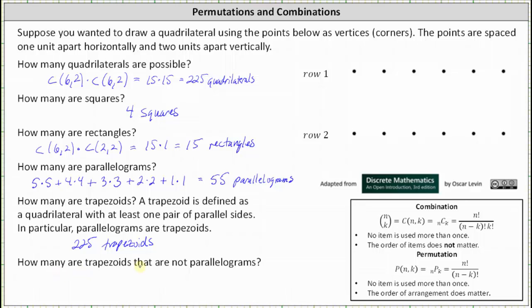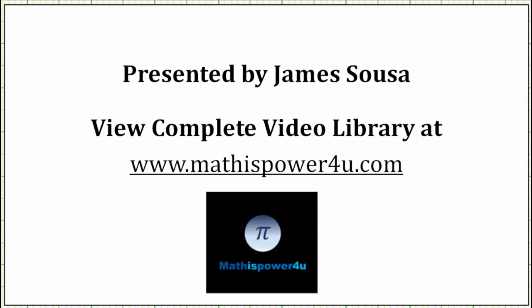The last question is how many are trapezoids that are not parallelograms? To answer this, we take all the trapezoids and subtract the number of parallelograms: 225 minus 55 equals 170 trapezoids that are not parallelograms. I hope you found this helpful.